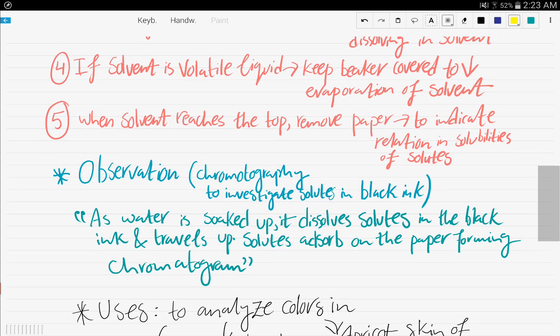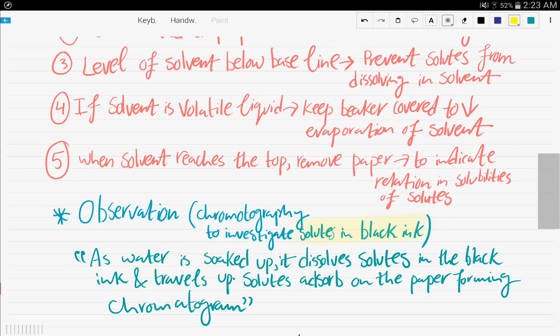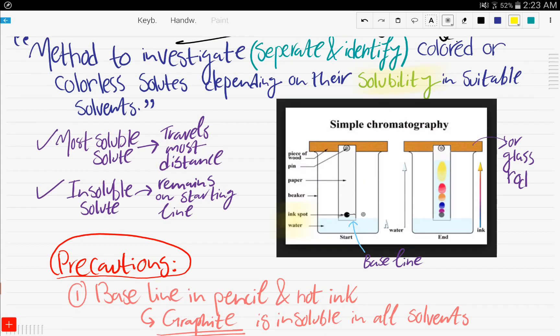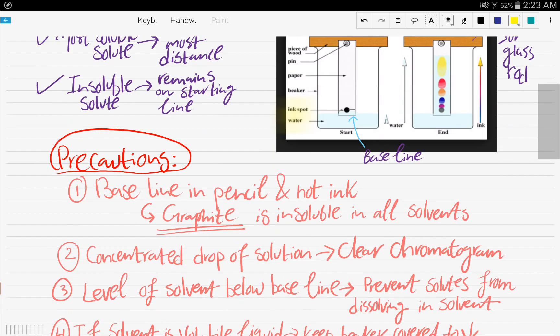So, what you will observe. If we're carrying out chromatography to investigate solutes in a black ink, what will happen is, the water will get soaked up, and the solutes in the ink will dissolve, and the solutes will adsorb on the paper, forming a clear chromatogram.